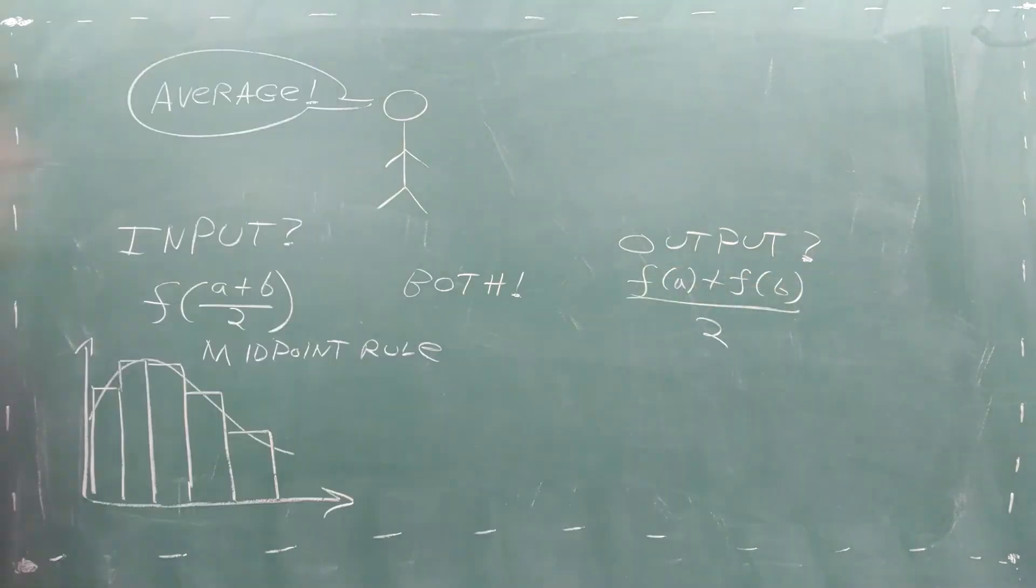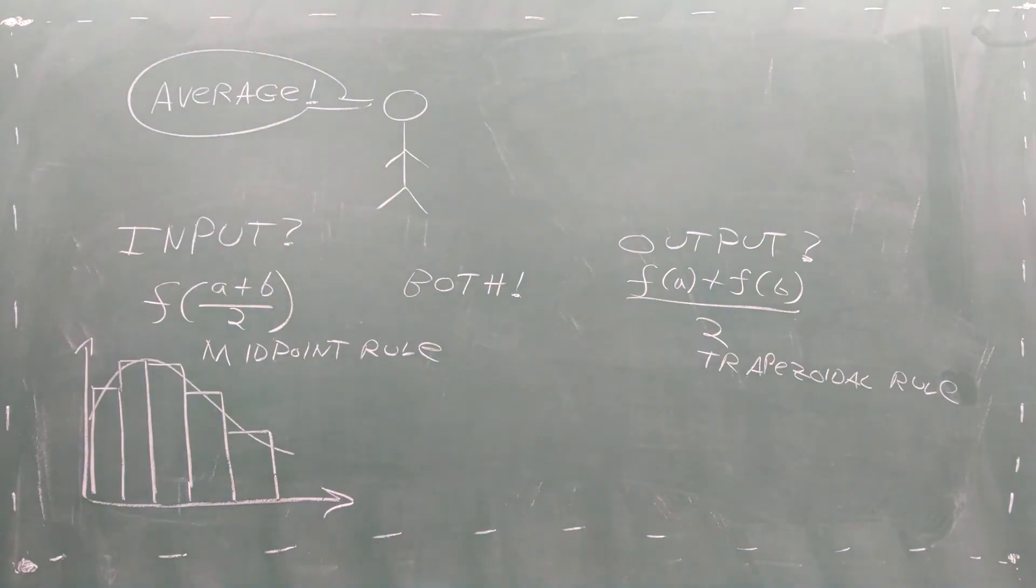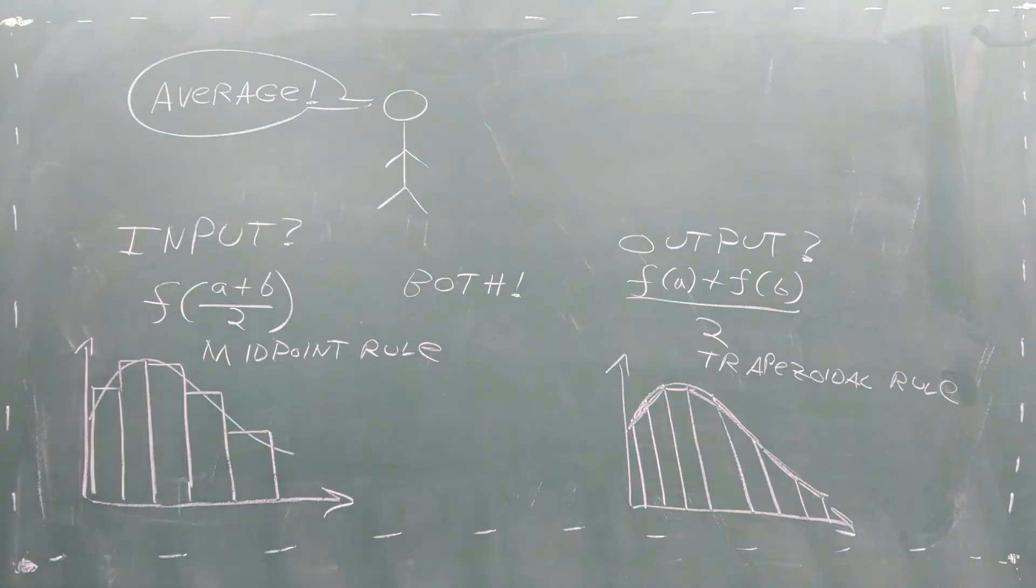On the other hand, if you average the output values, you're using the trapezoidal rule. Now, instead of using a rectangle, you're using a trapezoid, which has only a slightly more complicated formula for area.